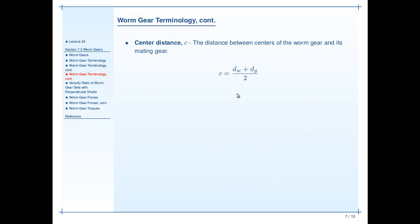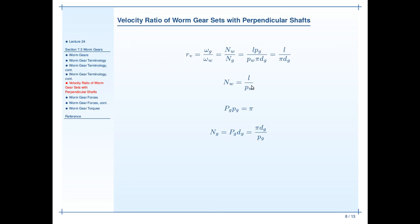Center distance for a worm gear system is exactly what you would expect. It's the pitch diameter of the worm, plus the pitch diameter of the gear, divided by two. The velocity ratio for worm gear sets are exactly the same as the velocity ratio for any other gear set. But because we have these relationships between the lead and the axial pitch, we can use a varying set of equations to figure out additional things. So please pay attention to these relationships.